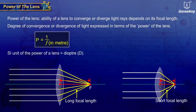The SI unit of the power of a lens is diopter, represented by D. If the focal length of a lens is 1 meter, then the power of the lens is 1 diopter.